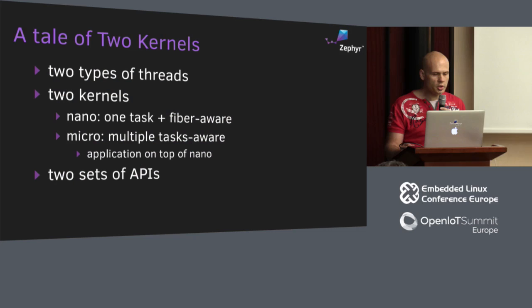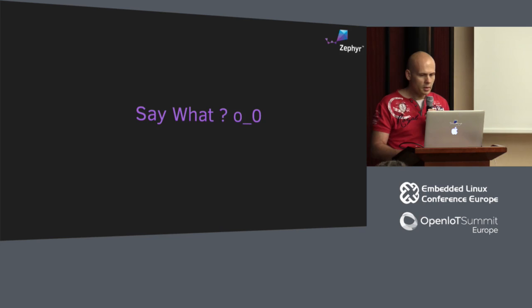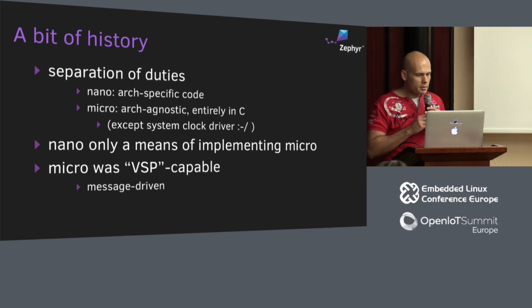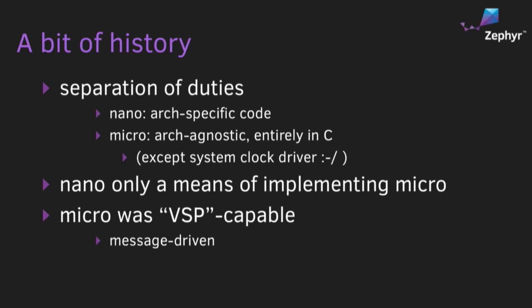On top of that we have two sets of APIs — one for each kernel. There is a reason for why it was built like that. First, separation of duties: the nano kernel is responsible for all the architecture-specific code, so if you want to port Zephyr to a new architecture you only have to port the nano kernel. The micro kernel, on the other hand, is all written in C and completely architecture-agnostic.